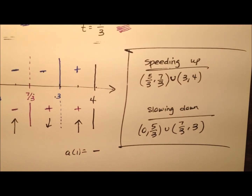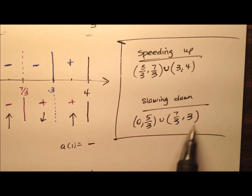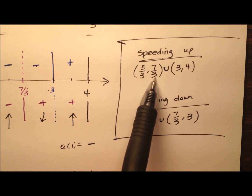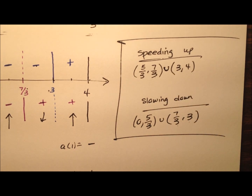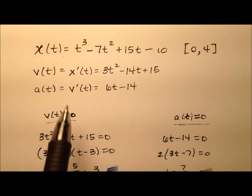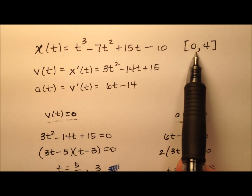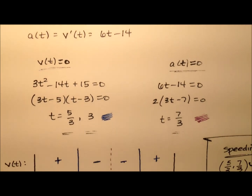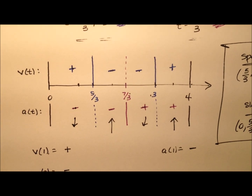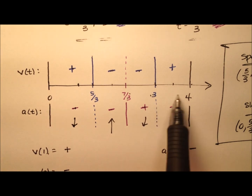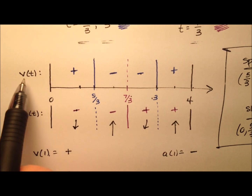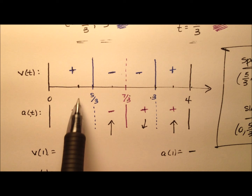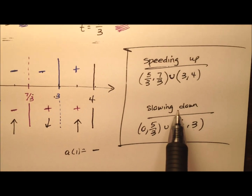The intervals cover all values from 0 to 4 — the four subintervals fit together perfectly. To recap: we were given a position function for a particle moving along the x-axis over t equals 0 to t equals 4. We found velocity and acceleration functions by differentiation, set each equal to zero to find critical numbers, plotted those on a number line with endpoints 0 and 4, used test points to determine the sign of each function in each region, and finally compared the signs of velocity and acceleration to determine where the particle is speeding up or slowing down.